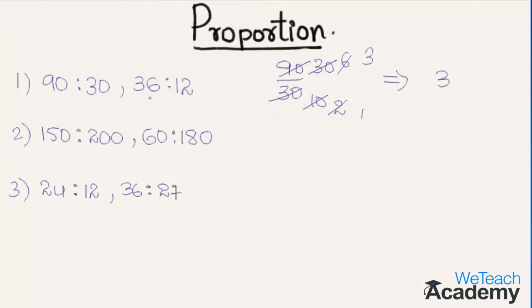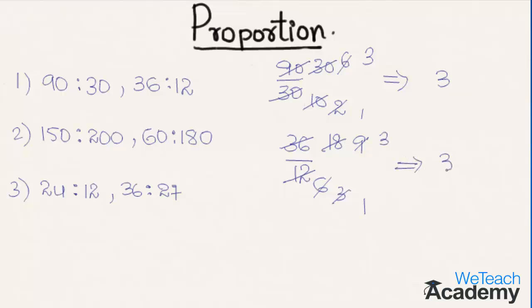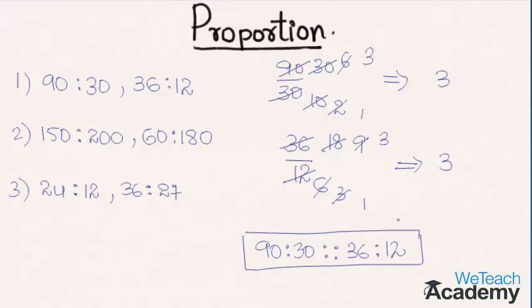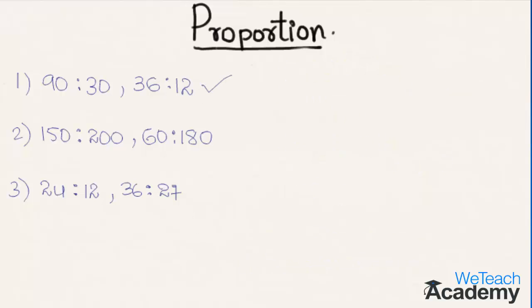Coming to the other ratio, 36 is to 12, which can be written as 36 divided by 12. Simplifying: 2 times 6 is 12 and 2 times 18 is 36. Further simplifying, 3 times 1 is 3 and 3 times 3 is 9. So we get here 3. Therefore the given ratios 90 is to 30 and 36 is to 12 are in proportion.